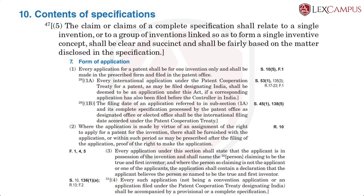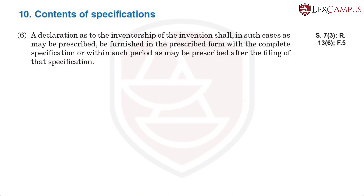Section 10(5) also has another requirement: that the complete specification shall be clear and succinct, and shall be fairly based on the matter disclosed in the specification. Subsection 6 says that the declaration as to inventorship of the invention shall, in such cases as may be prescribed, be furnished in a prescribed form with the complete specification or within such period as may be prescribed after the filing of the specification.